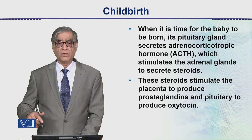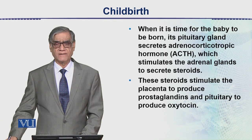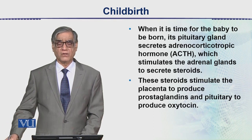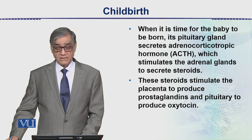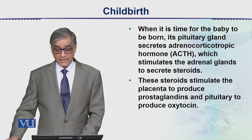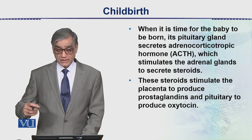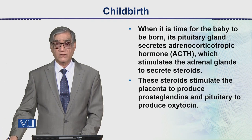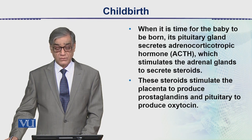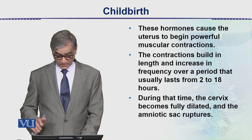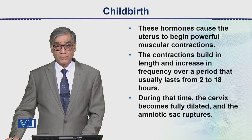Changing hormone levels initiate parturition. Oxytocin hormone increases significantly. The pituitary gland secretes adrenocorticotrophic hormone, also called ACTH, which stimulates the adrenal gland to secrete steroids. These steroids stimulate the placenta to produce prostaglandins and the pituitary to produce oxytocin. These hormones cause the uterus to begin powerful contractions.